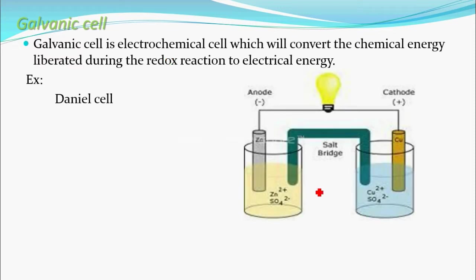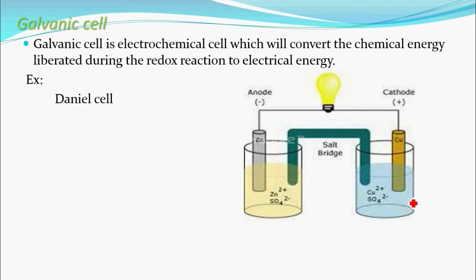In the Daniel cell, this part is the anode and this part is the cathode. At the anode, we take a beaker in which we put zinc sulfate solution, and in that solution we place a zinc rod. This is the anode half cell. At the cathode, we take a beaker with copper sulfate solution and place a copper rod.